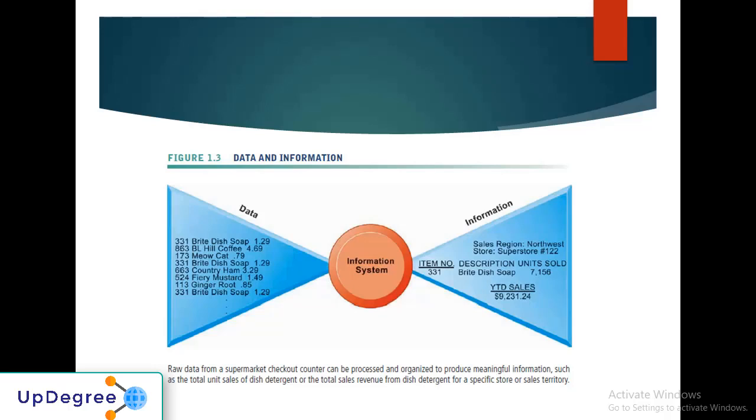Here's an example. On my left I see a list of lines showing some numbers, the product name, and the price. I have product code 331, this soap is sold for $1.29. This is just an information log which you get in a supermarket. We're trying to consolidate all the sales which happened in a supermarket.